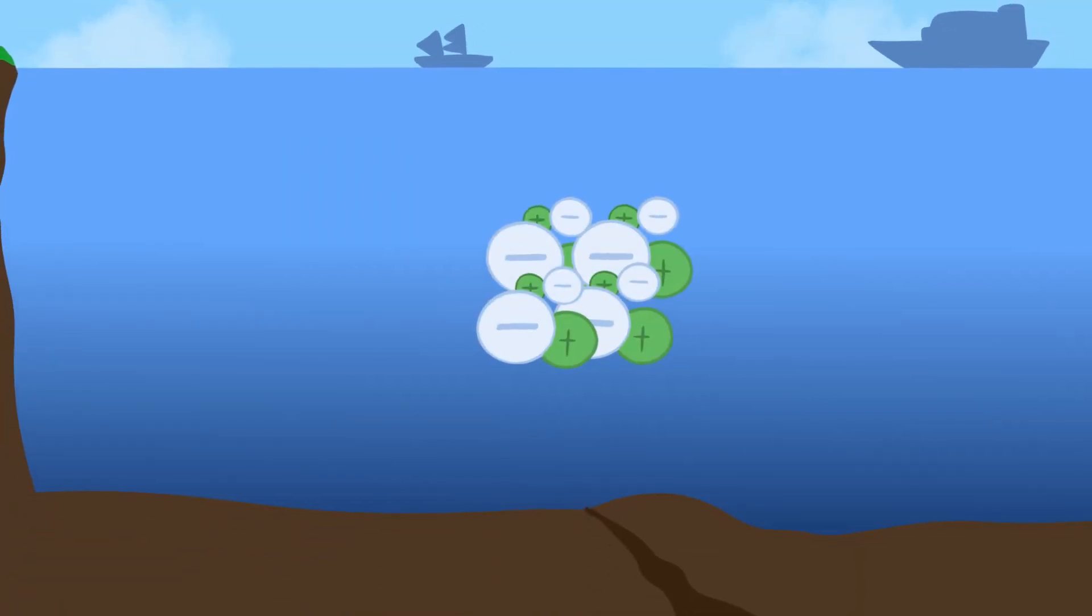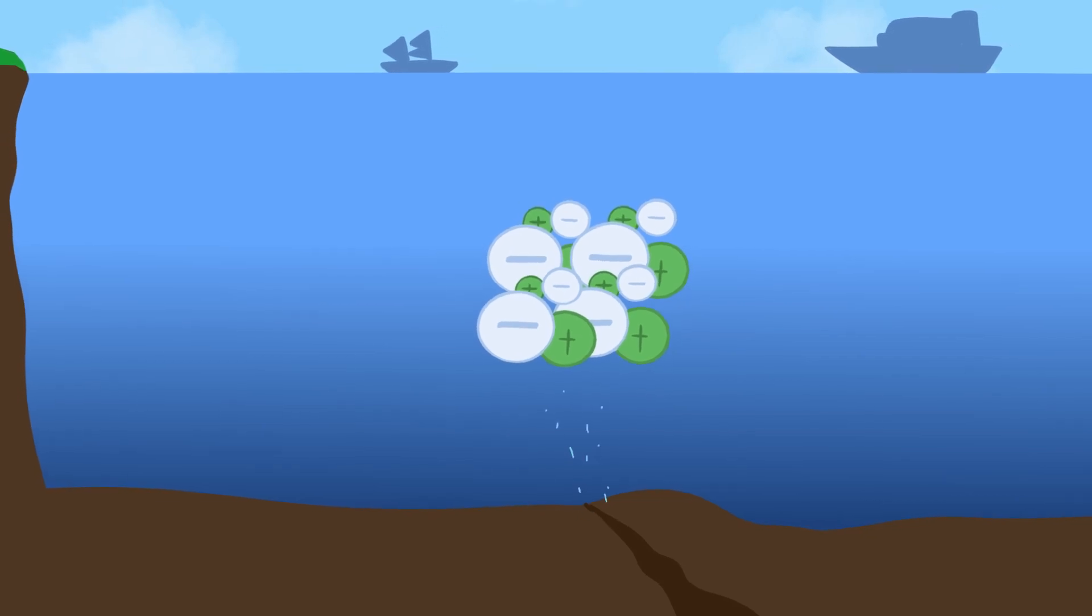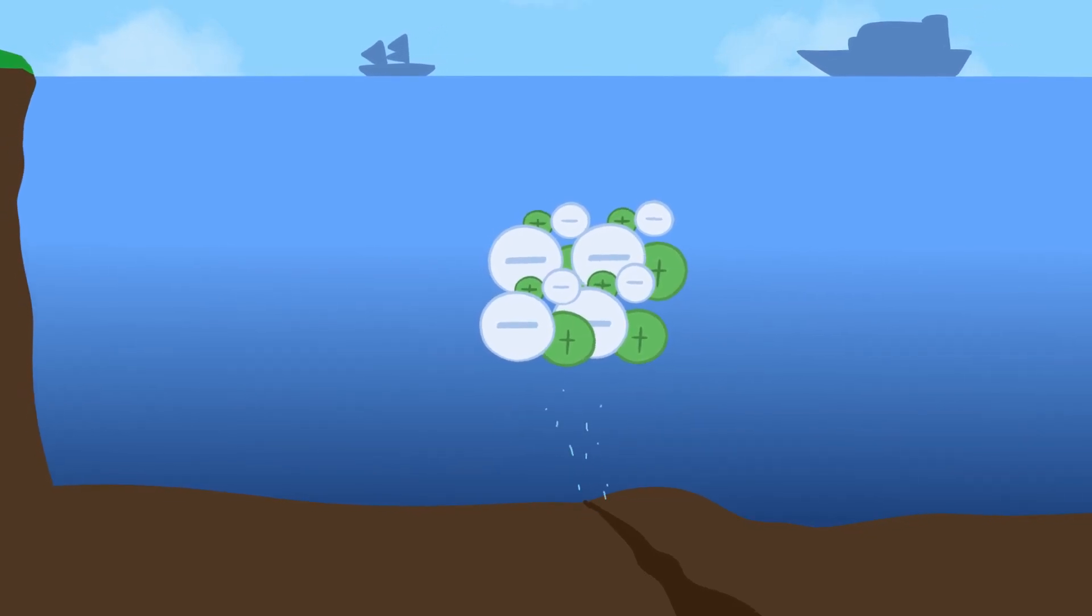The salt in the ocean comes from two main sources, which is runoff from the land and openings in the sea floor.